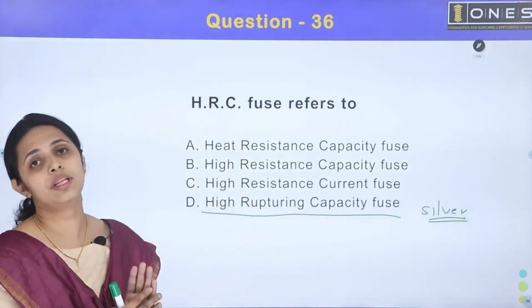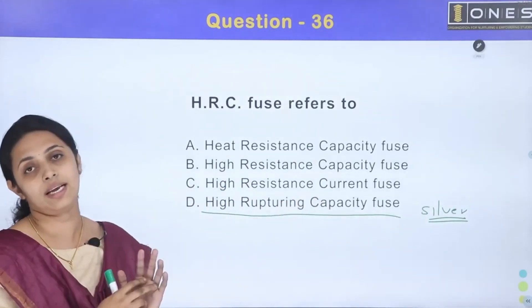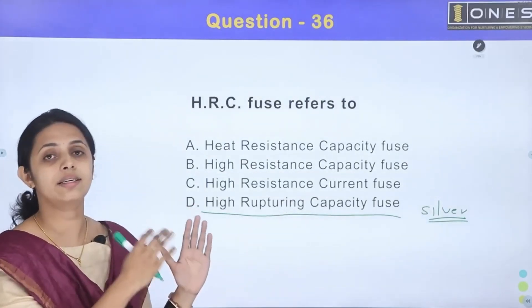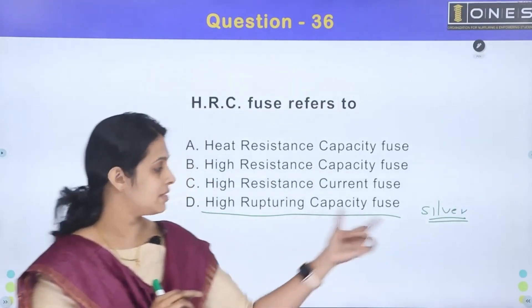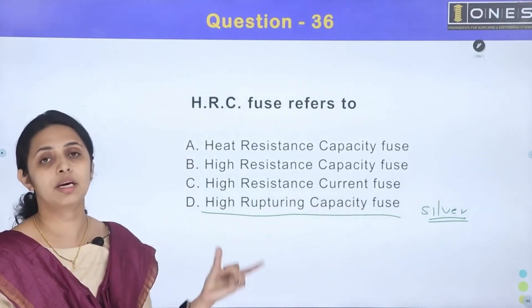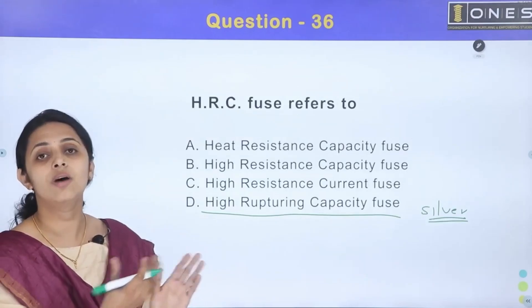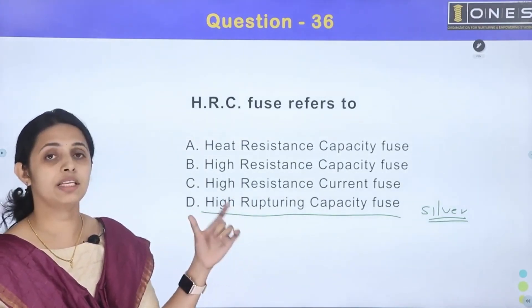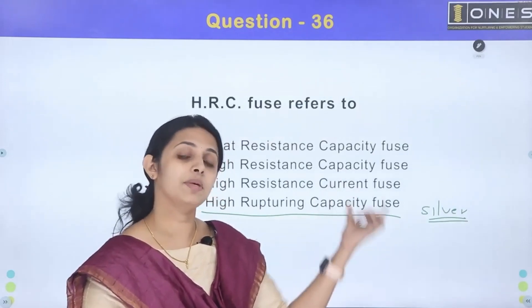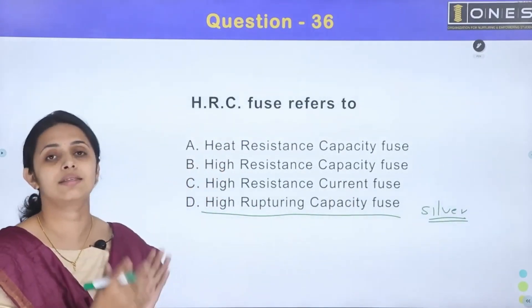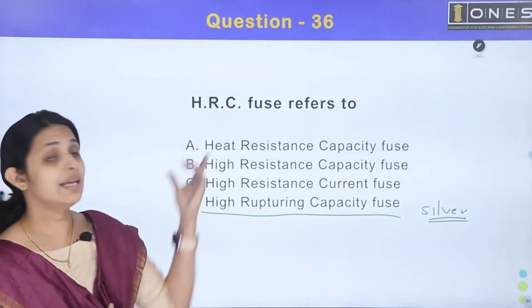The HRC Fuse uses a glass or quartz tube filled with powder. Inside, there are silver contacts, end plates, and a fuse wire. When high current passes, the silver vaporizes, and the quartz tube filling undergoes a chemical reaction to form a high-resistant substance, acting as a cooling mediator and interrupting the circuit.